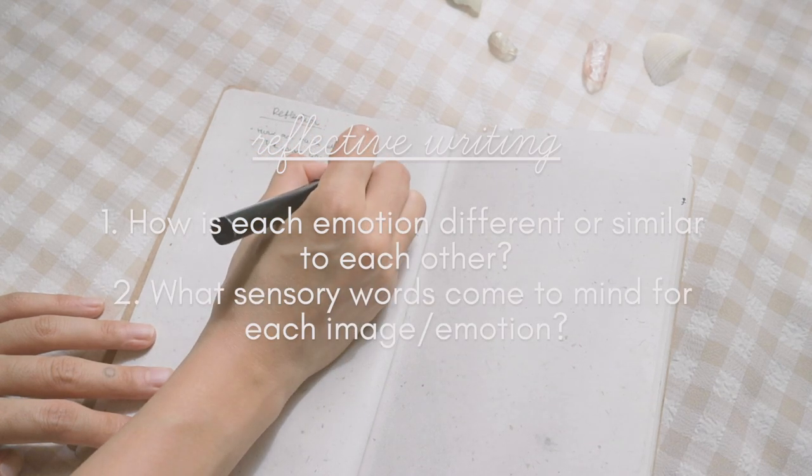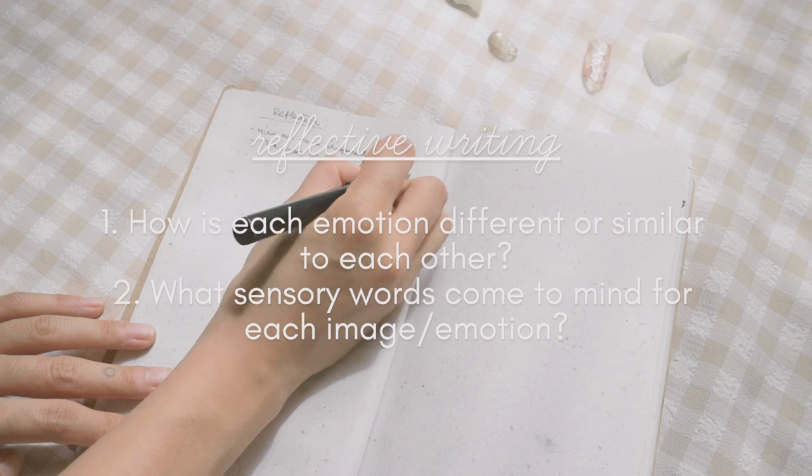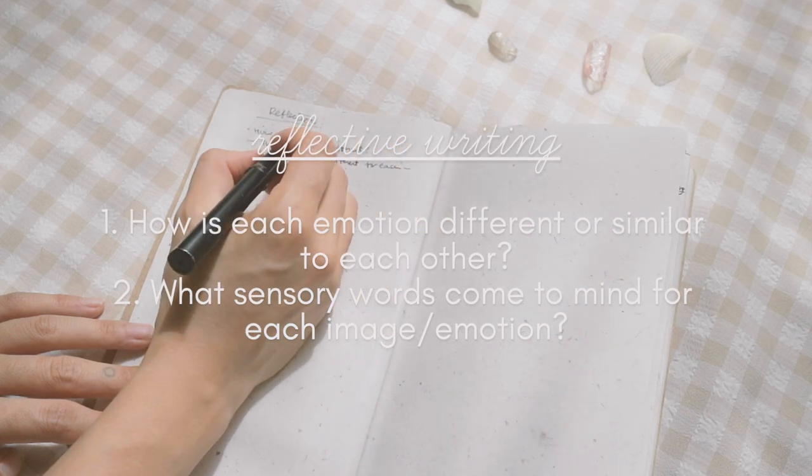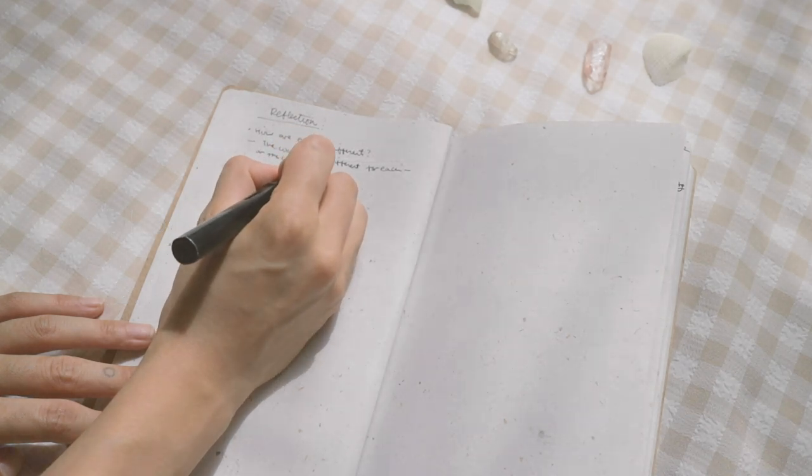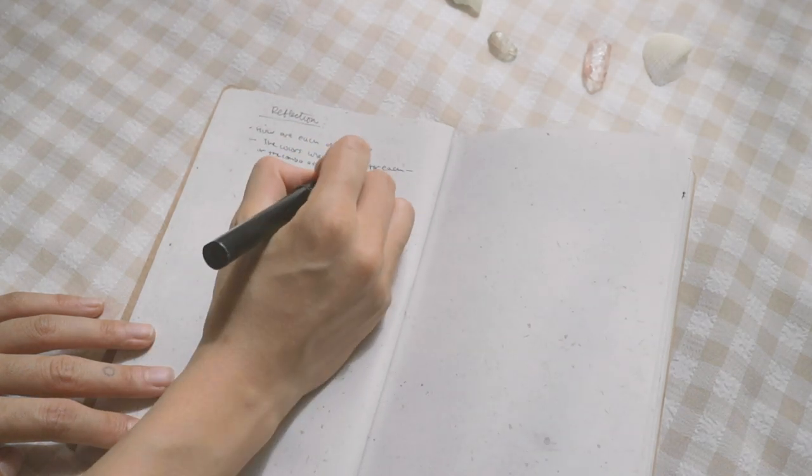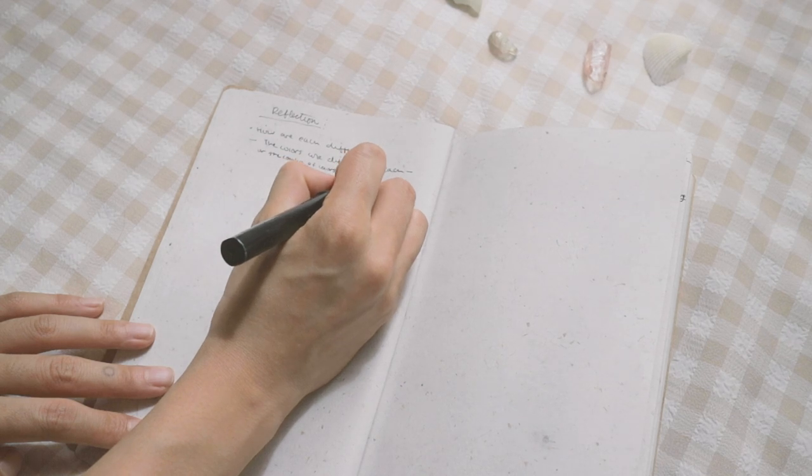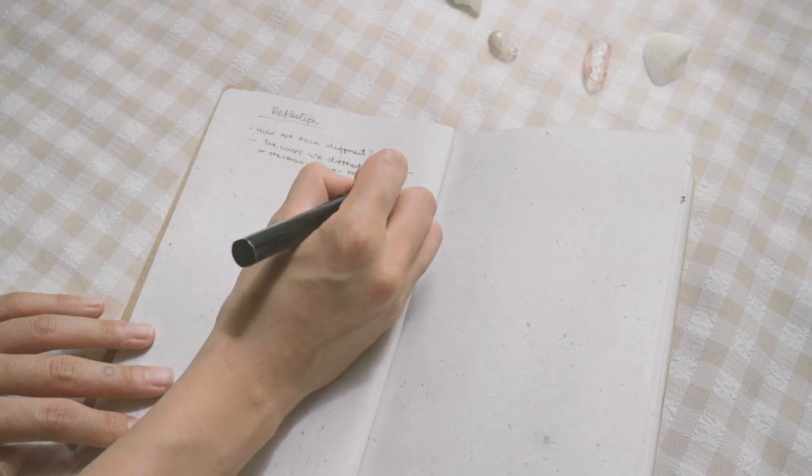And second question is what sensory words come to mind for each emotion or each picture? So these might include hot or ungrounded or shaky.